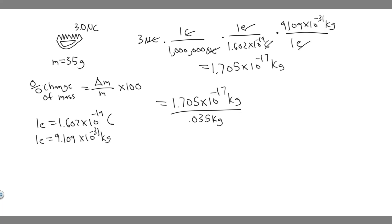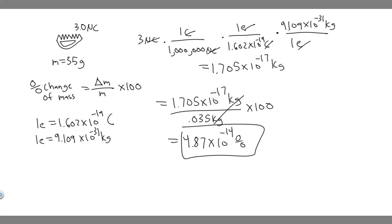Then we multiply by 100. The kilograms cancel, so we compute 1.705 times 10 to the minus 17 divided by 0.035, times 100. When you do this, you get 4.87 times 10 to the minus 14 percent. Keep in mind this is in percent because we multiplied by 100. You can round to 4.9 if you'd like, but the answer is 4.87 times 10 to the minus 14 percent.